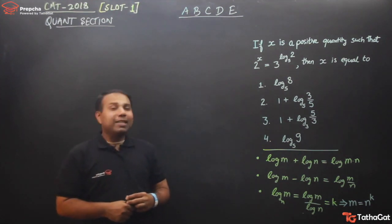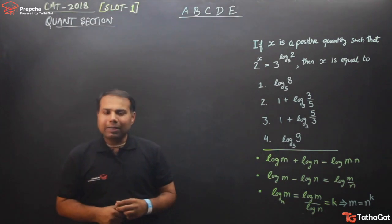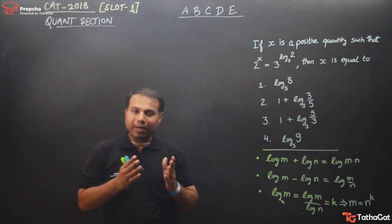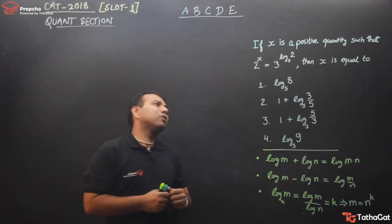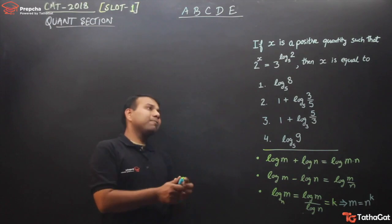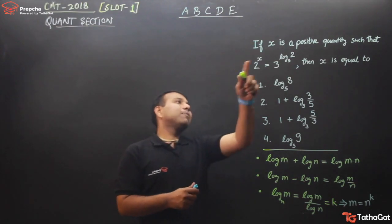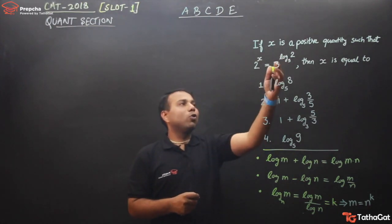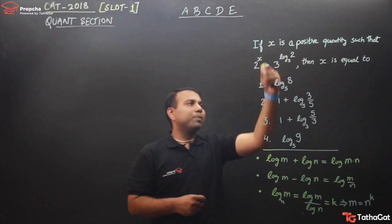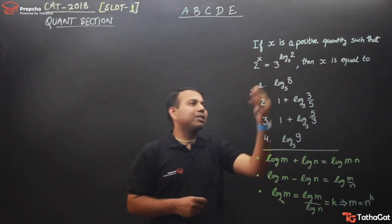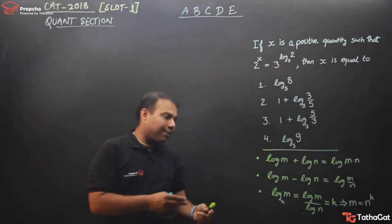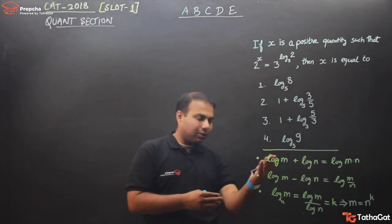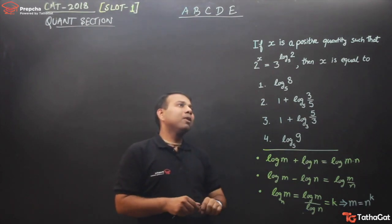As I mentioned, there were 3 questions based on log in CAT 2018 slot 1. This question says: if x is a positive quantity such that 2 raised to power x equals 3 raised to power log of 2 to the base 5, then x is equal to — we have 4 options. I have also written for you, for quick reference, the basic properties of the logarithm.